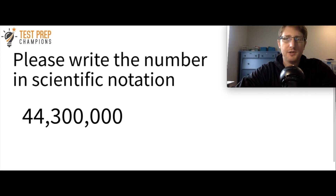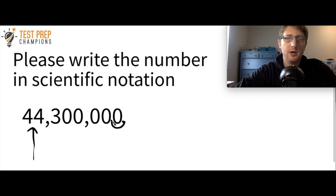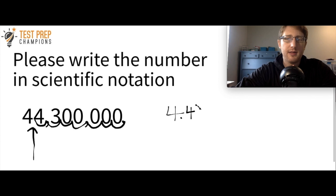Here's your next example. I want to end up with my decimal point between the fours. Right now my decimal point is at the end of the number, so I move it to the left and count the moves: 1, 2, 3, 4, 5, 6, 7. So I write 4.43 times 10 to the 7.